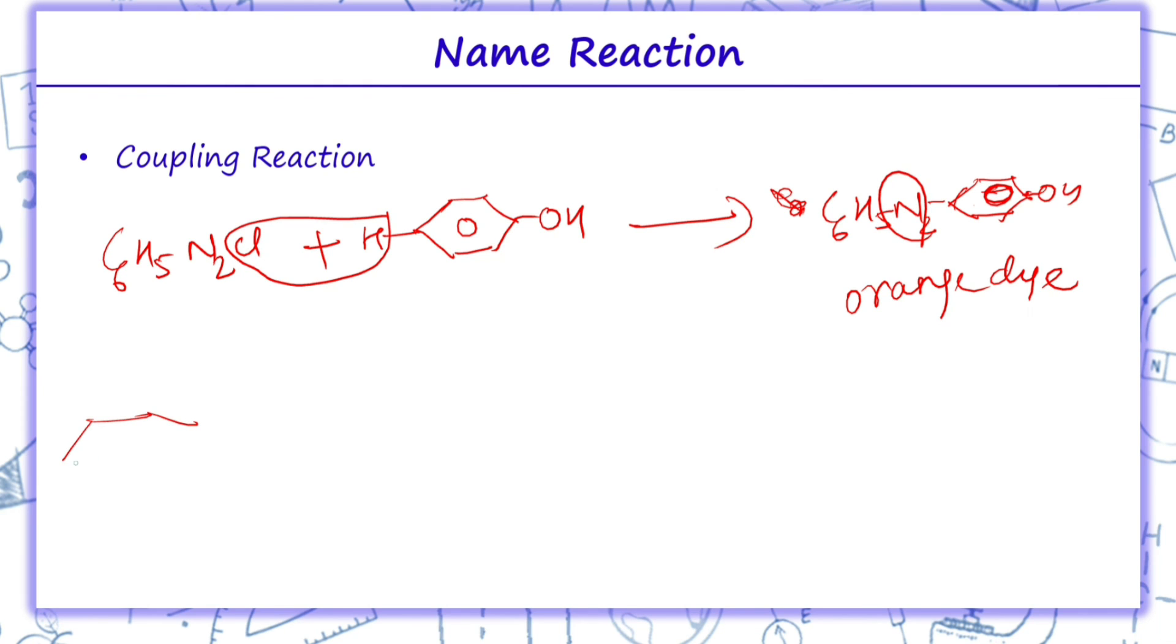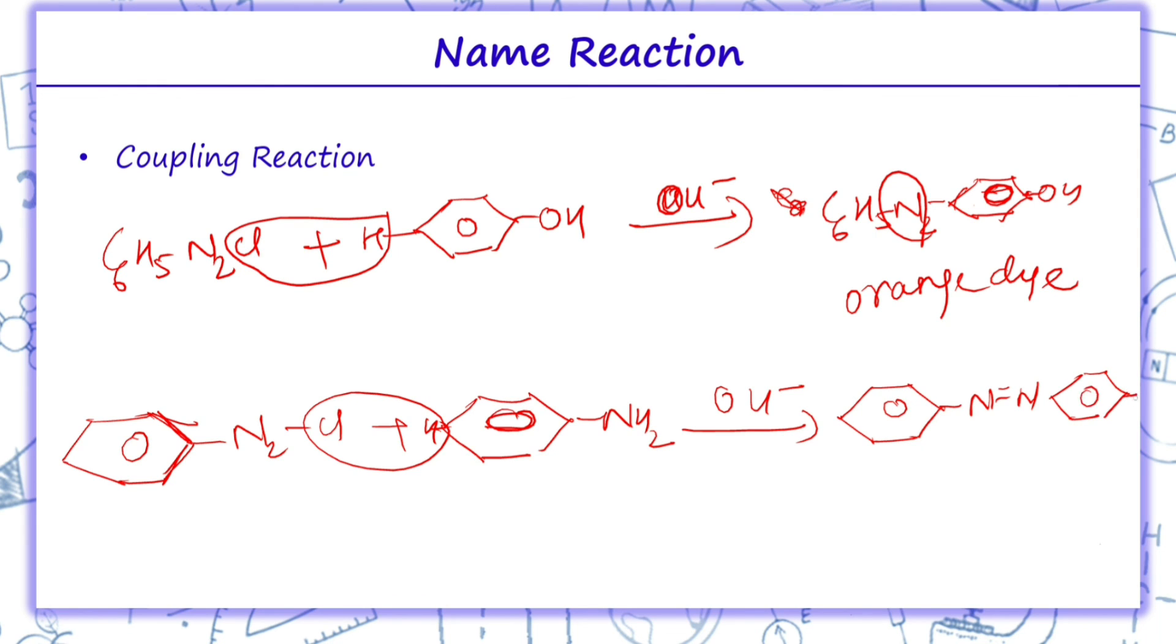In same manner, if we are taking aniline, if aniline is taken over here, again this hydrogen will be replaced. In case of aniline we get para-aminoazobenzene which is yellow dye.